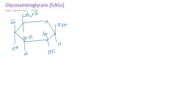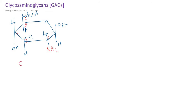In mucopolysaccharides, one component will be amino sugar. Amino sugar means the hydroxyl group attached to carbon number 2 is replaced by an amino group. So initially it was glucose, now it becomes glucosamine. Similarly, in galactose — where the C4 OH group is in the opposite position — replacement of the C2 OH with amino gives galactosamine. So the amino sugar is either glucosamine or galactosamine.